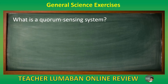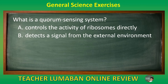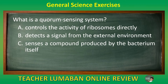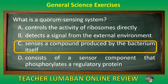What is a quorum sensing system? Letter A controls the activity of ribosomes directly. Letter B detects a signal from the external environment. Letter C senses a compound produced by the bacterium itself. Letter D consists of a sensor component that phosphorylates a regulatory protein. The correct answer is letter C: senses a compound produced by the bacterium itself. A quorum sensing system senses a compound produced by the bacterium itself.